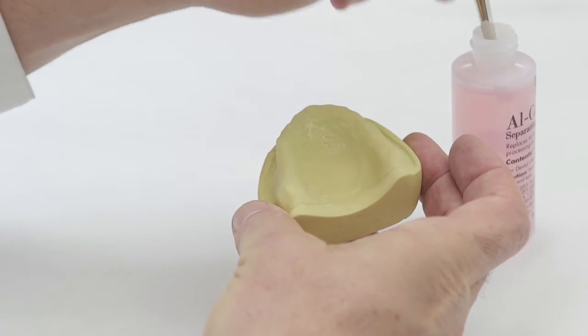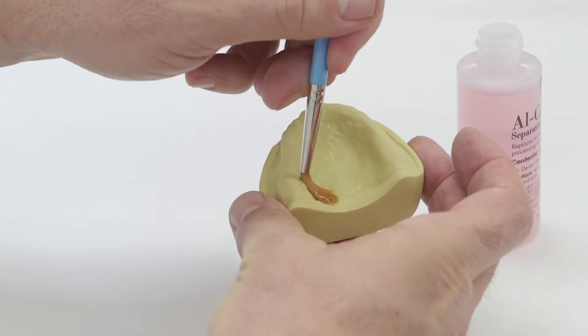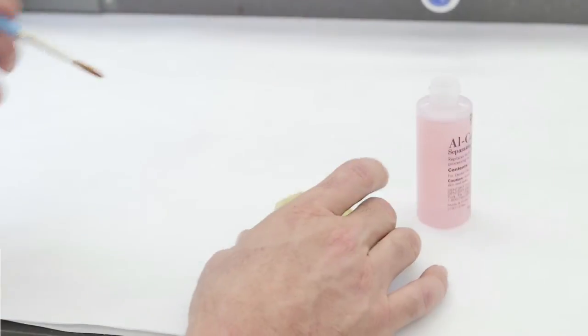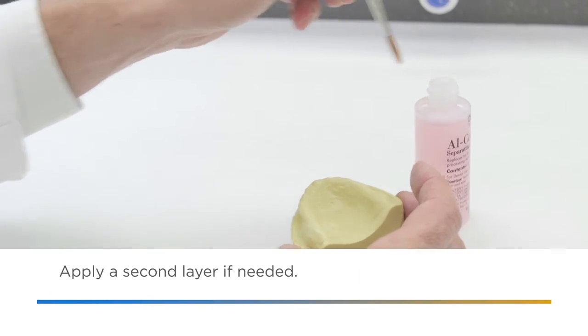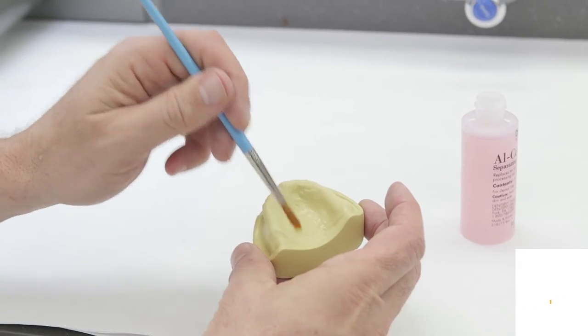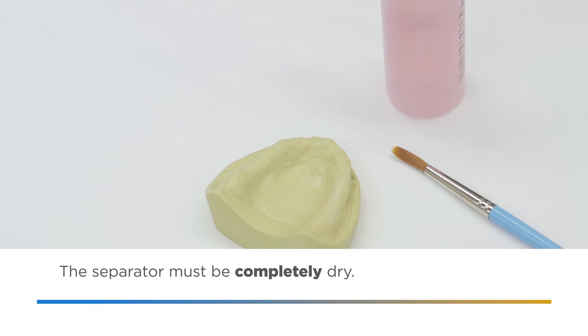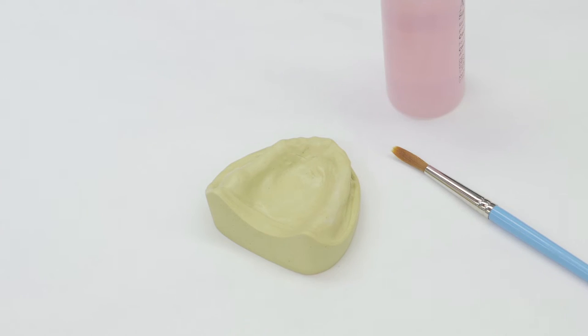Use a brush to apply a thin coat of all coat separating agent to the cast. Do not allow the separator to puddle. Apply a second layer as needed. Make sure the separator is completely dry before placing it back in the mold. If it is not completely dry, blanching may occur.